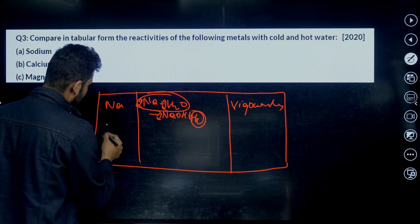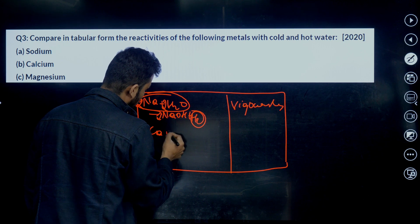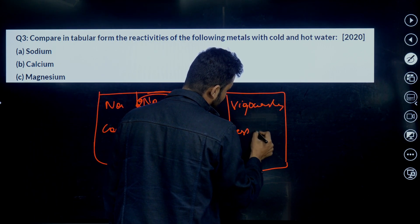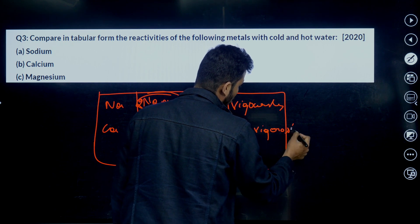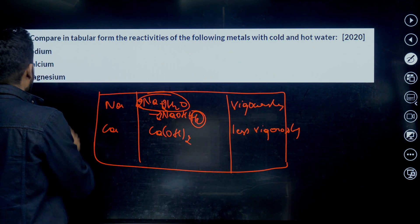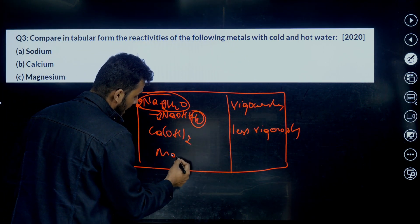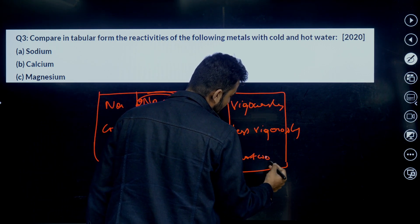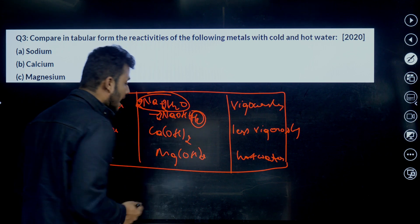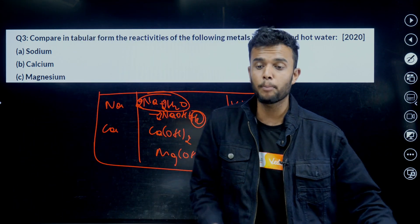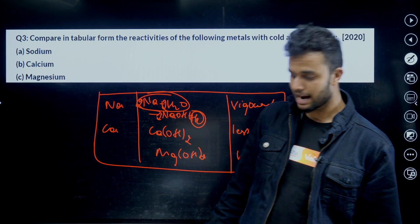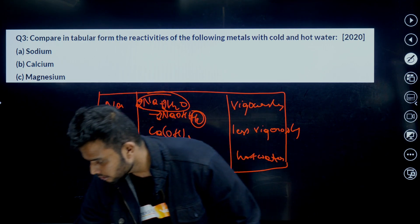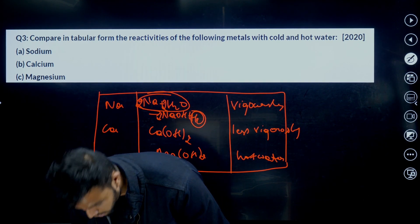It reacts vigorously with cold water. What about next one, calcium. Calcium also forms Ca(OH)2, calcium hydroxide, and also it less vigorously compared to sodium. Less vigorously with cold water. What about magnesium? Magnesium hydroxide, Mg(OH)2. It reacts with hot water. Whenever we heat the compound, now whenever we heat the magnesium and water compound it reacts with water. Magnesium reacts with water in hot condition.